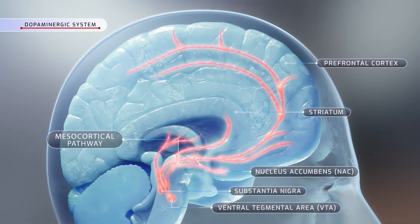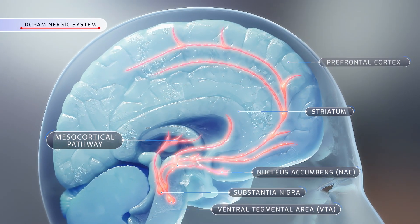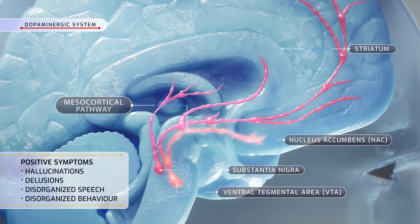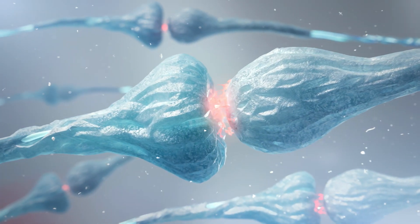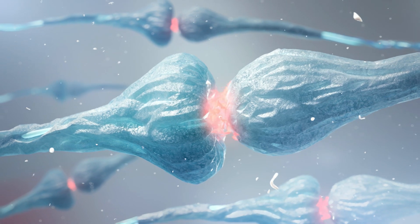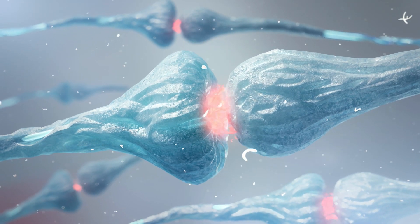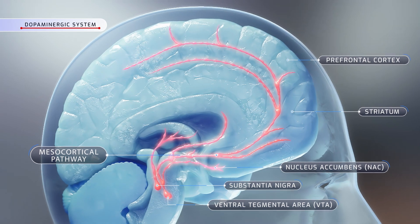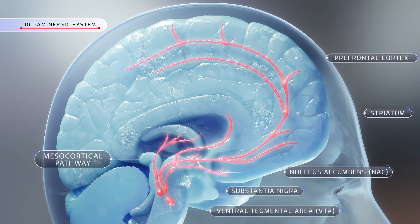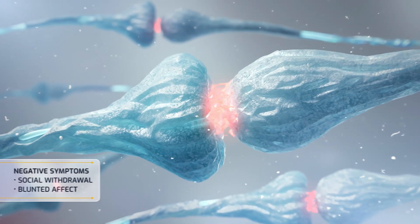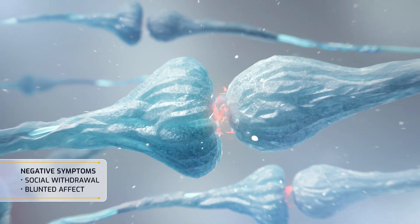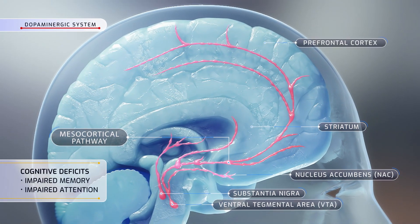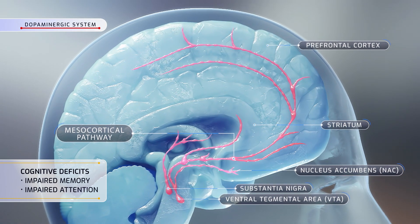According to the classical dopamine hypothesis of schizophrenia, positive symptoms such as hallucinations and delusions can be attributed to hyperactivation of the dopaminergic mesolimbic pathway, while hypofunctionality of the dopaminergic mesocortical pathway results in negative symptoms such as social withdrawal and blunted affect and cognitive deficits, including impaired memory and attention.